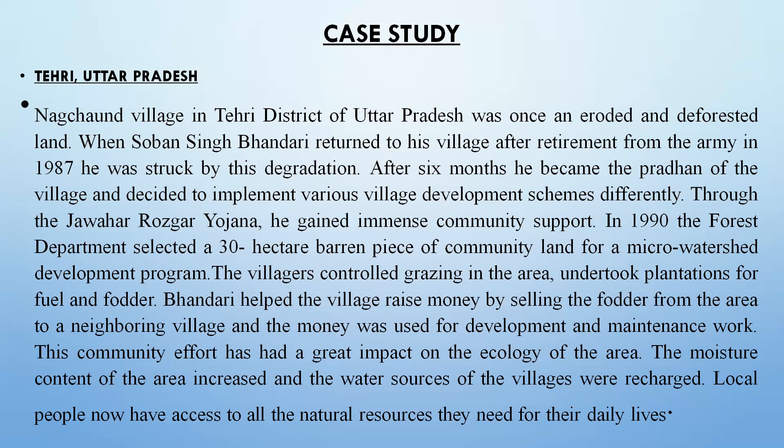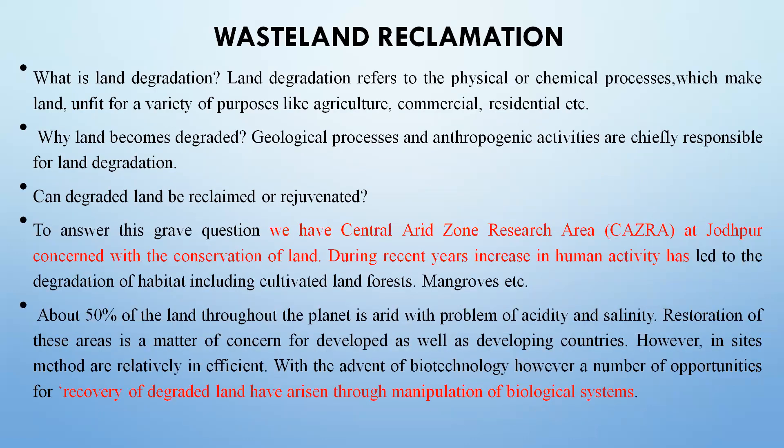So what we have observed is that the land which was wasted, barren, dry, deforested, eroded, and degraded — soil that was in very bad condition — was reclaimed and made to flourish again. Its productivity was increased and its soil quality was improved. This is what wasteland reclamation means: the recovery of degraded land when we recover degraded or poor land through manipulation of biological systems.